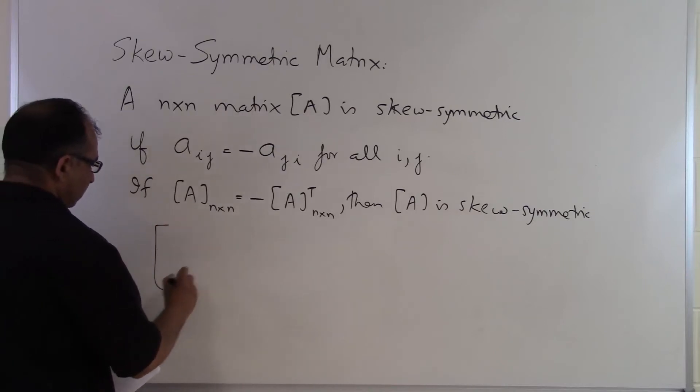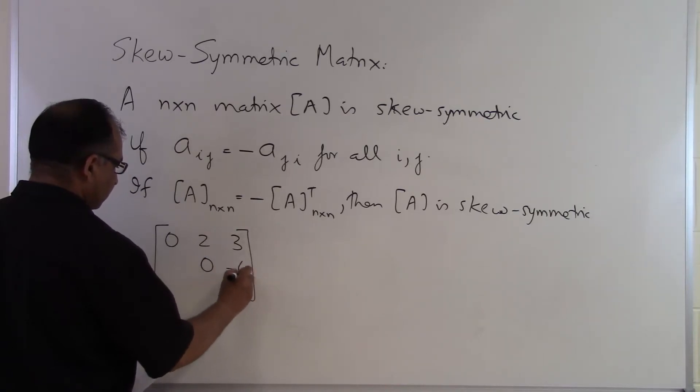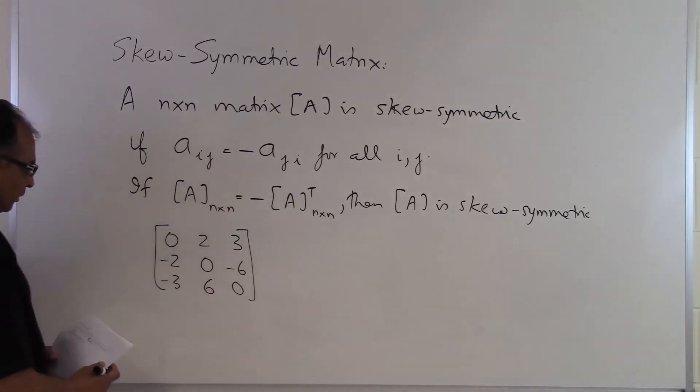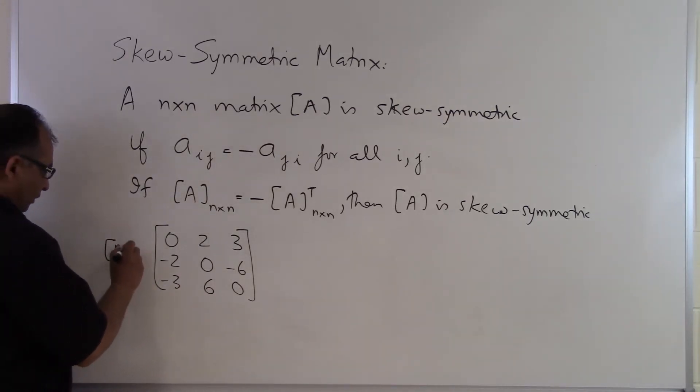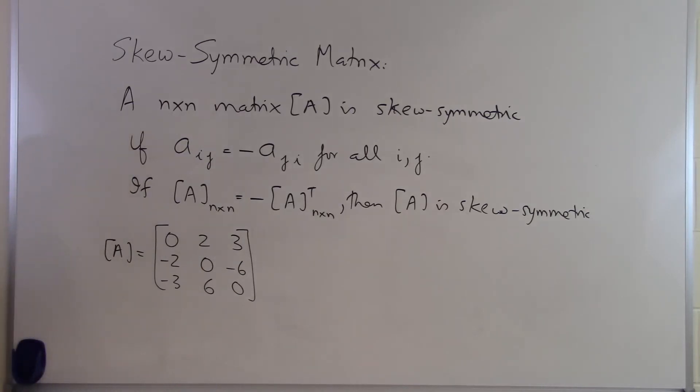So let's look at an example here. Zero, two, three, zero, zero, minus six, minus two, minus three, plus six. This particular matrix here A which is a three by three so it's a square matrix. That's the first requirement for a matrix to be skew symmetric.